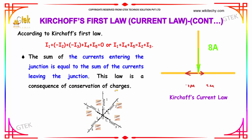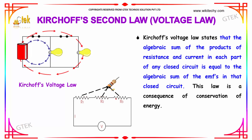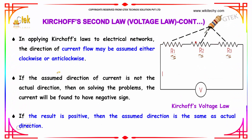This law is a consequence of conservation of charges. Kirchhoff's voltage law states that the algebraic sum of the product of resistance and current in each part of any closed circuit is equal to the algebraic sum of the EMFs in that closed circuit. This law is a consequence of conservation of energy. If the assumed direction of current is not the actual direction, then solving the problem will yield a negative sign; if the result is positive, the assumed direction matches the actual direction.